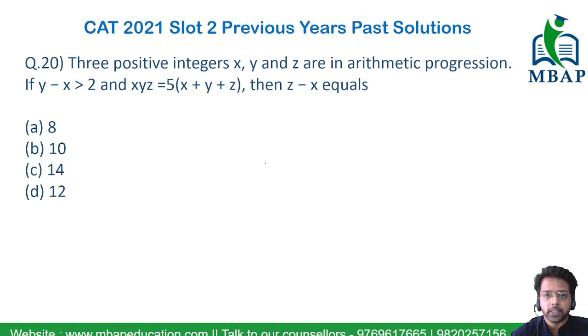Let's see an easy question. The next question is for arithmetic. The question says three positive integers x, y and z are in arithmetic progression.